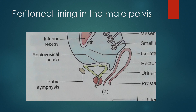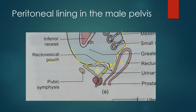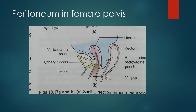Now we come to the peritoneal linings in the male pelvis. The peritoneum coming from the lower abdomen — in the male pelvis there are two main structures: the bladder and the rectum. The peritoneum covers the upper part of the rectum completely, the middle rectum partially, and then comes over and covers the superior aspect of the bladder. This pouch is known as the rectovesical pouch. The bladder is subperitoneal and then the peritoneum continues with the anterior abdominal wall. So there is only one pouch in the male pelvis: the rectovesical pouch.